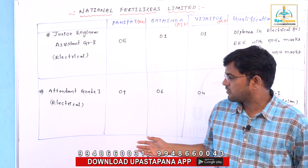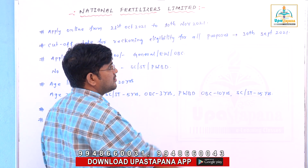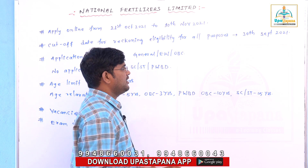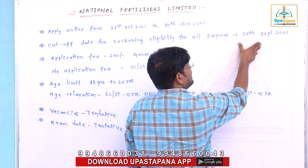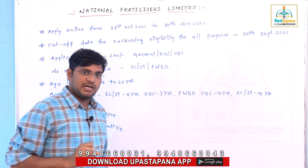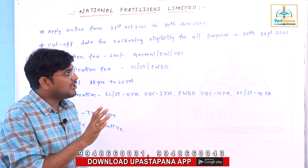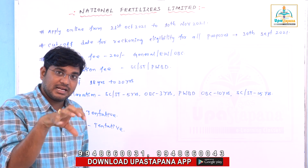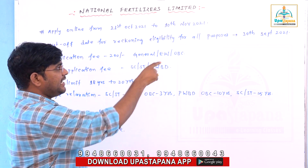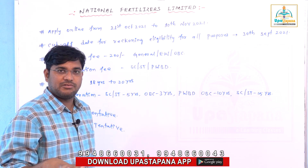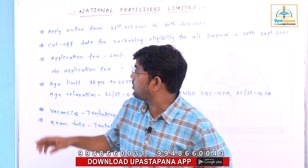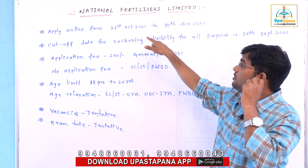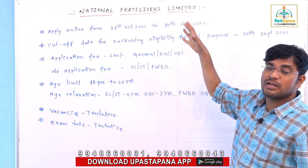Let's start the details. The application date starts on September 13th, 2021. For junior engineer, a diploma is required; for Attendant Grade 1, the certificates must be dated by 30th September 2021. The application opening date is 21st October 2021, and the last application date is 10th November 2021.